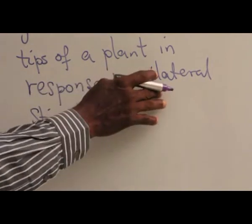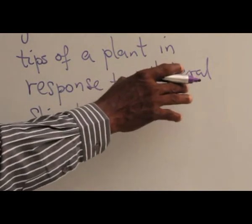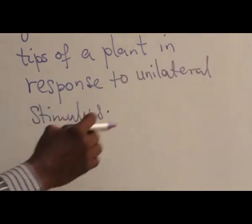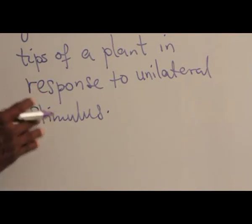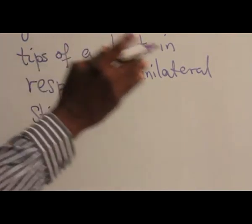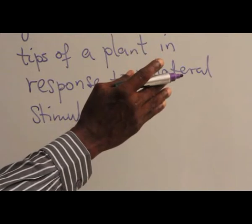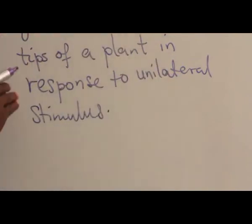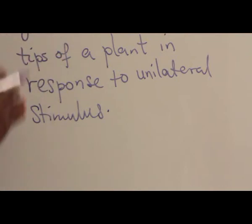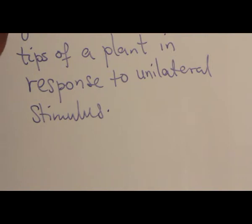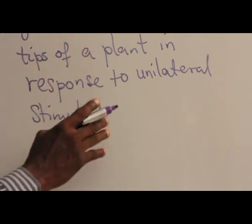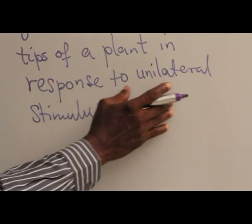Unilateral, because the stimulus is coming from one source and the plant reacts by growing towards the source of the stimulus or away from the stimulus. So we have positive and negative tropism. We name them according to the response.